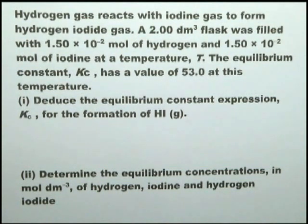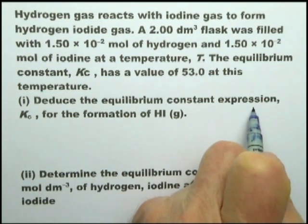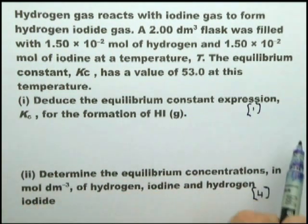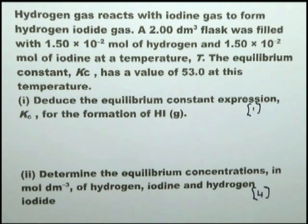Sometimes when examiners do these kind of questions, they get them wrong. In this particular case, they've put a mark here for 1, whereas here they put a mark of 4. That's perfectly okay - deduce the equilibrium constant expression and give it one mark. That's fine.